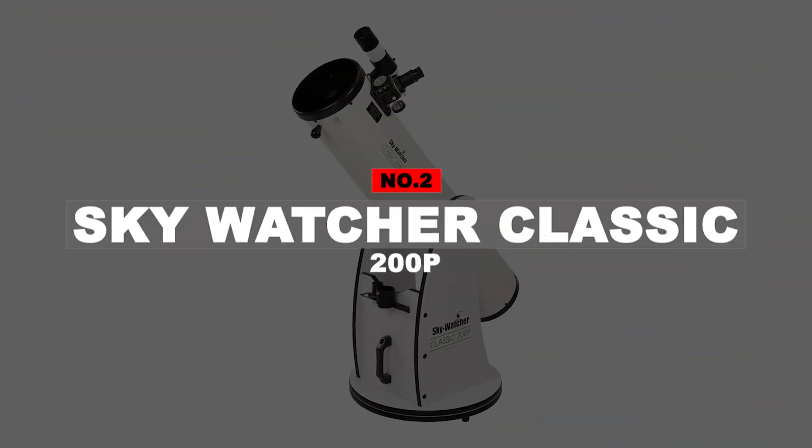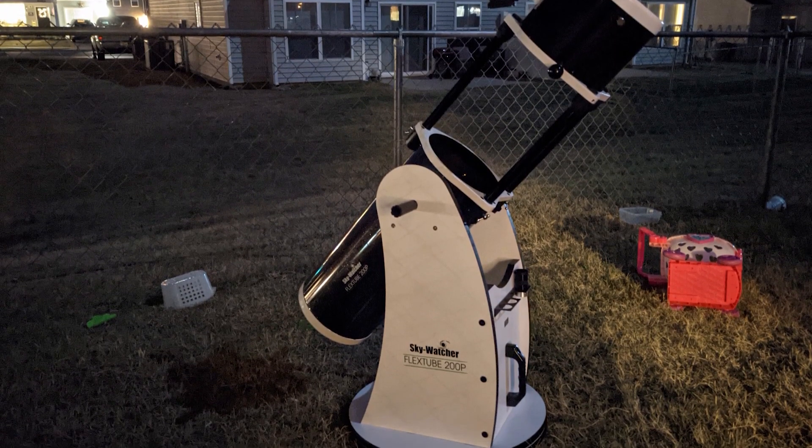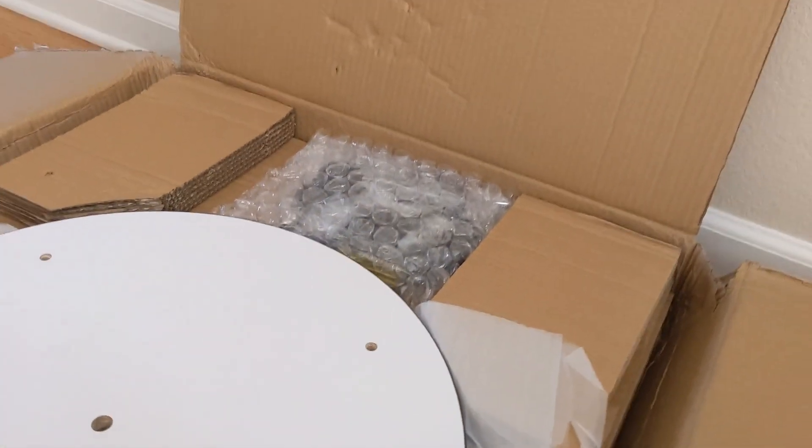Number 2. Skywatcher Classic 200p. The Skywatcher Classic is a Dobsonian telescope, meaning it's a big cannon-shaped beast. Don't let the size scare you off. Dobsonian telescopes are perfect for your first astronomical instrument. Once out of the box, you'll be stargazing in a matter of minutes.